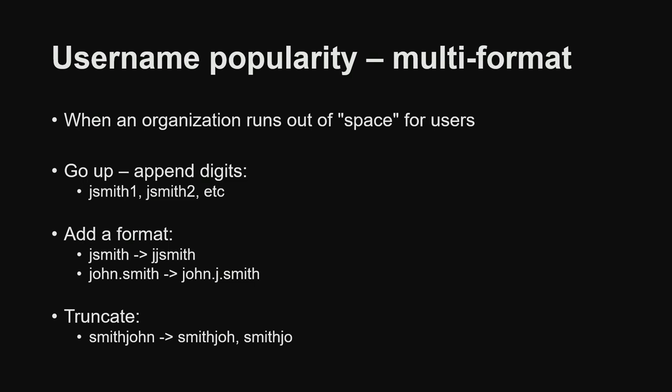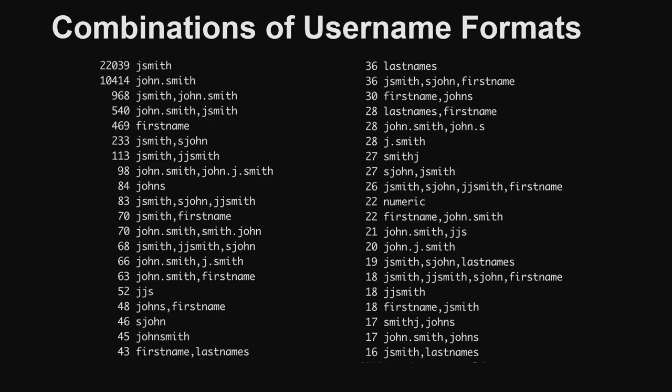If you're starting with JSmith, you have to do something when you hit your 2000th user or so. You can go up in digits, add a format, switch from JSmith to JJSmith, or truncate. Those are the main ways organizations handle it. I catalogued what combinations were used — the combinations are also sorted by popularity on each level. The third and fourth most common are basically the same thing, just flipped.